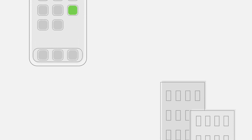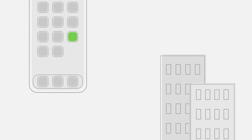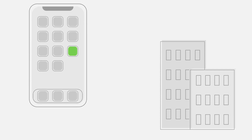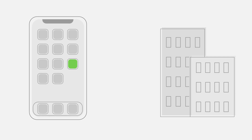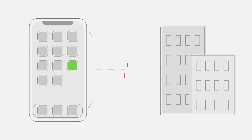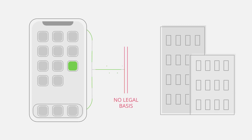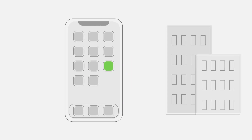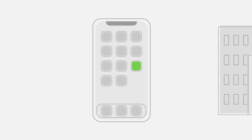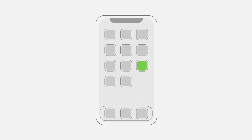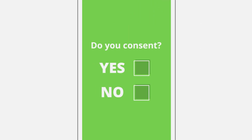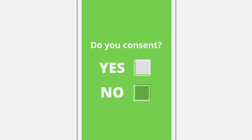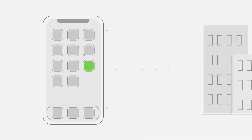To process personal data via an app, the app provider, in their role as data controllers, needs to have a legal basis. For many organizations, this means processing is based on the freely given and informed consent of the user, which should be documented to help demonstrate compliance.